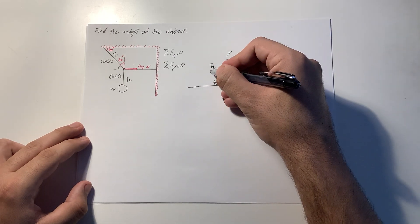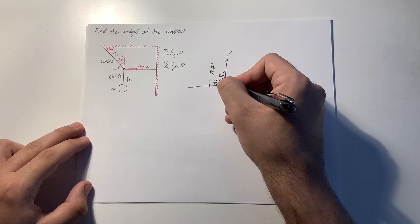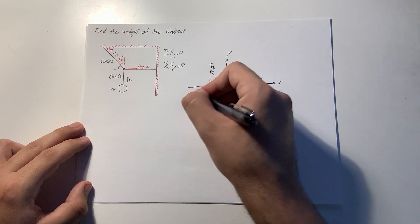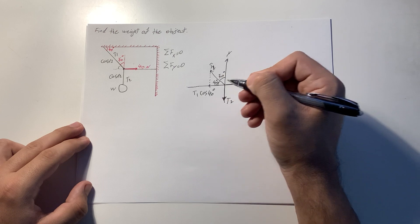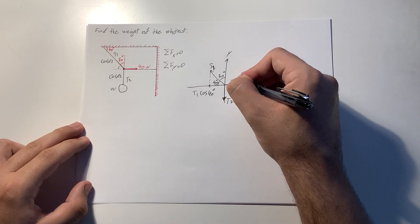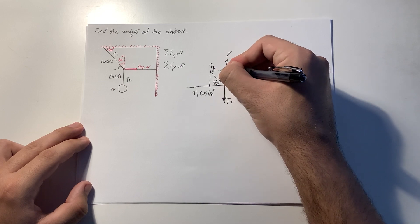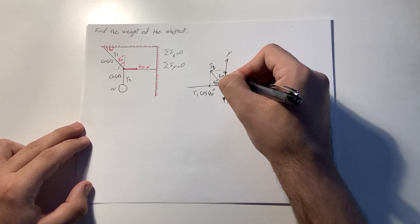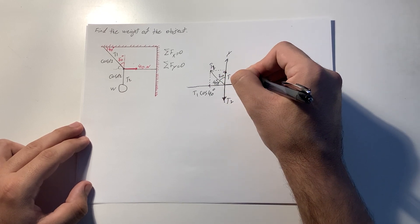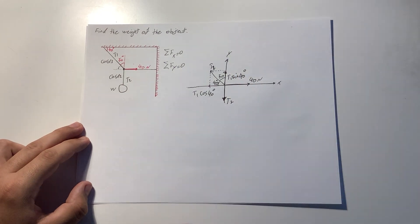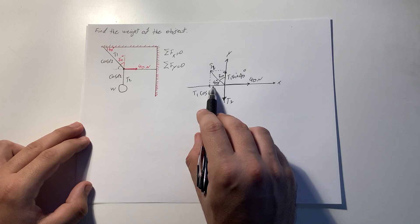Let's find the components of T1. One component is T1 cosine of 40 degrees, and the other component is T1 sine of 40 degrees.